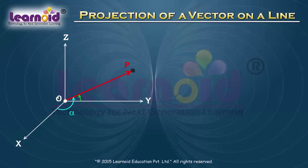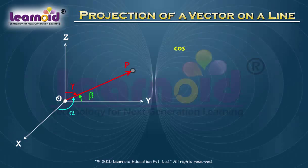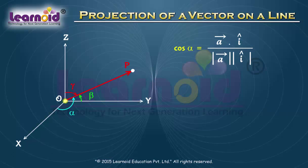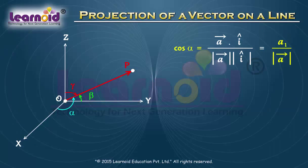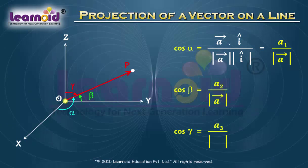If alpha, beta, and gamma are the direction angles of a vector A equal to A1 i-cap plus A2 j-cap plus A3 k-cap, then its direction cosines are given as: cos alpha equals A dot i-cap divided by the magnitude of vector A, or cos alpha equals A1 divided by the magnitude of vector A. Similarly, cos beta equals A2 divided by the magnitude of vector A, and cos gamma equals A3 divided by the magnitude of vector A.